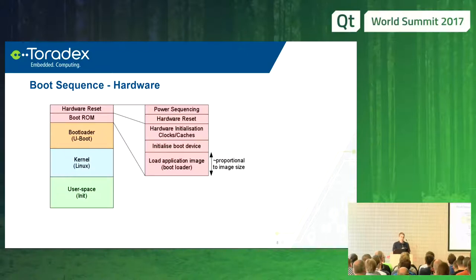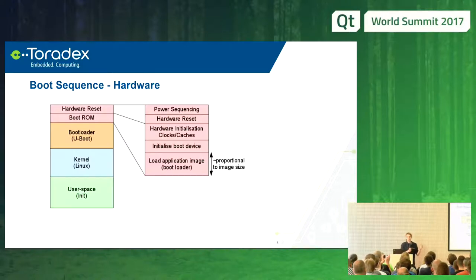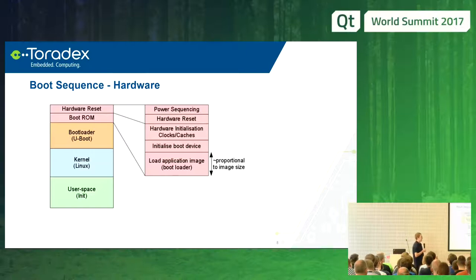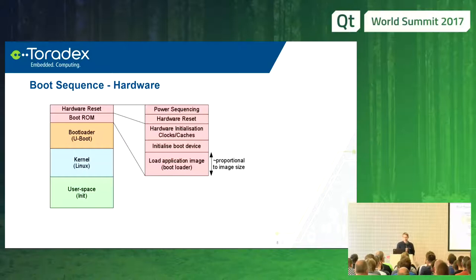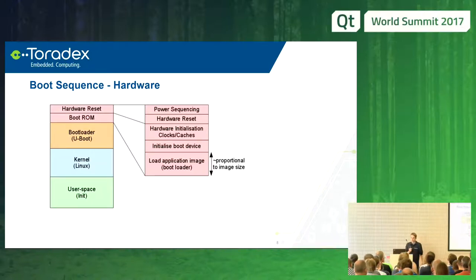From the lower-level hardware perspective: there is real hardware initialization, including power sequencing. Modern SoCs need multiple power rails powered on. Hardware engineers need to ensure this time is minimized — usually in the order of tens to hundreds of milliseconds. Then there is clock early initialization done by the boot ROM, which is already software but hard-coded software from the SoC provider. There is not a lot one can do there.